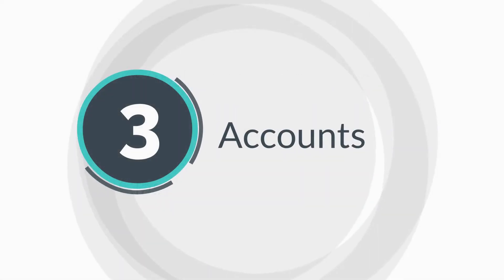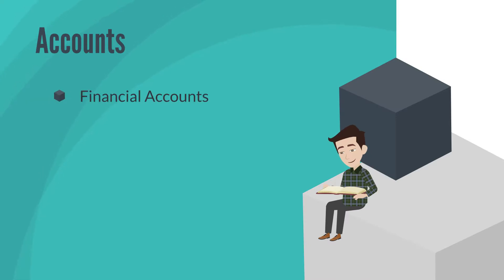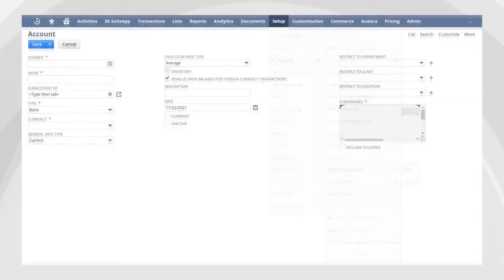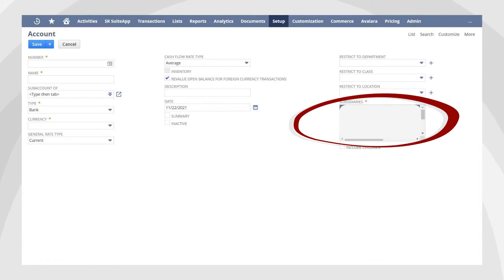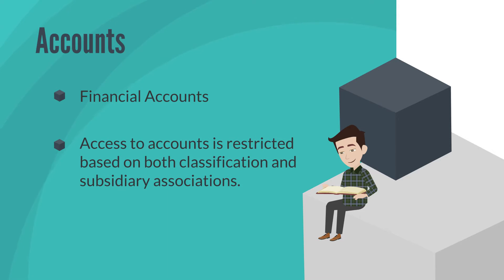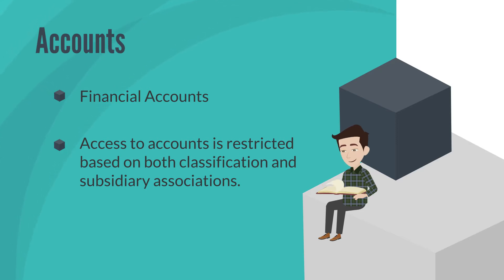Finally, let's take a quick look at accounts. Accounts are simply financial accounts, including everything from bank accounts, asset accounts, AP and AR accounts, and liability accounts. You can create a new account by navigating to Setup > Accounting > Manage GL > Chart of Accounts > New. When creating a new account, you can associate it both with specific subsidiaries and classifications. As a result, users can only choose accounts on transactions when the transactions and accounts share the same subsidiary and classification restrictions. This ability to restrict access to accounts through subsidiaries and classifications helps to maintain the integrity of a company's financials.